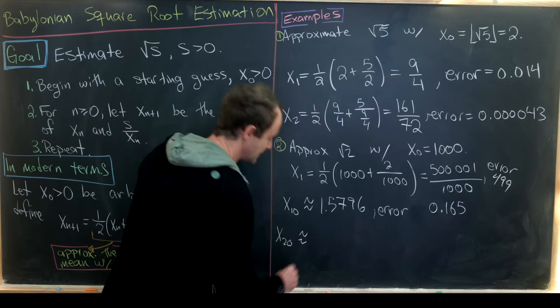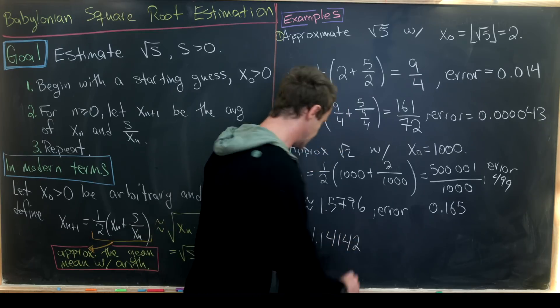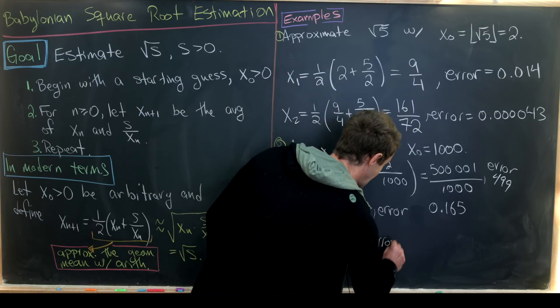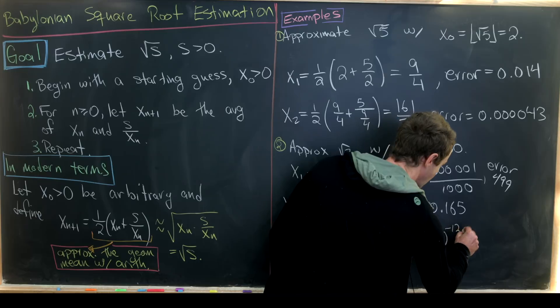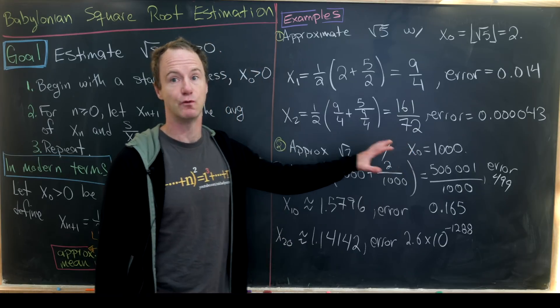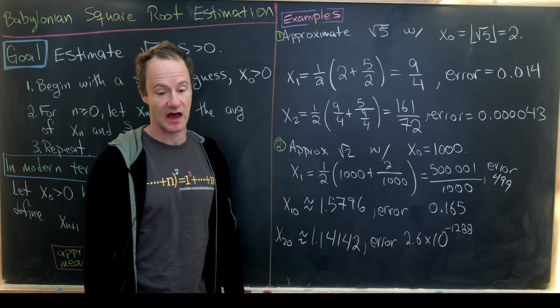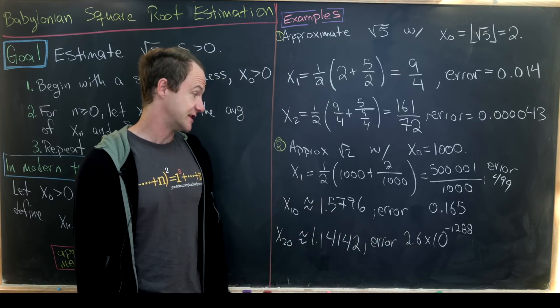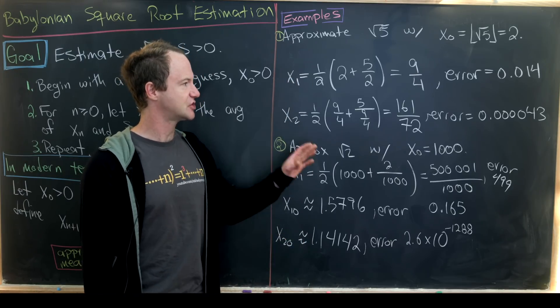And then if we go down to x₂₀, we get approximately 1.14142. You might look at that and say that looks pretty close to the square root of 2 already, and in fact it is. So the error in this case is about 2.6 × 10⁻¹²⁸⁸. So again, I think this is pretty interesting. Even though we have a starting point which is way far away from the square root of 2, our 20th term is astronomically close to the value of the square root of 2. Another thing I'd like to point out is in order to get this precision, I had to increase Mathematica's built-in precision limit, otherwise it would have seen no error at all.